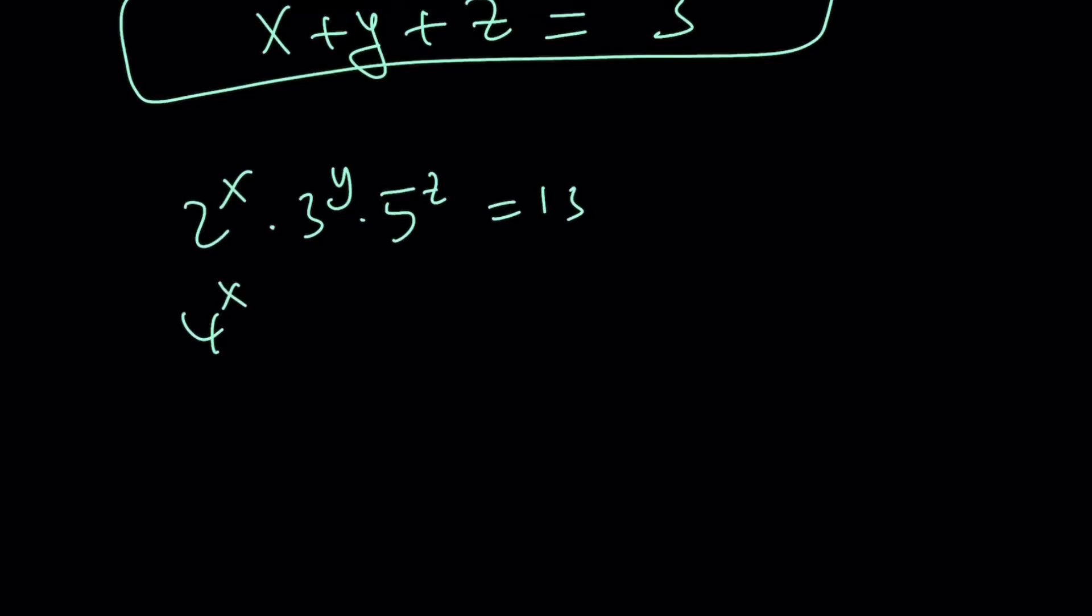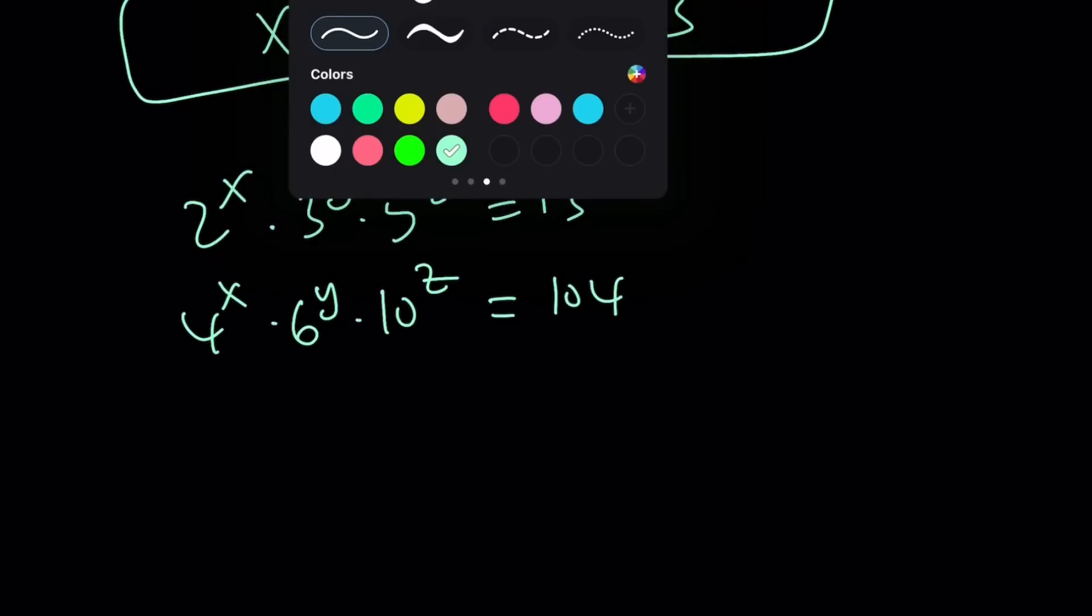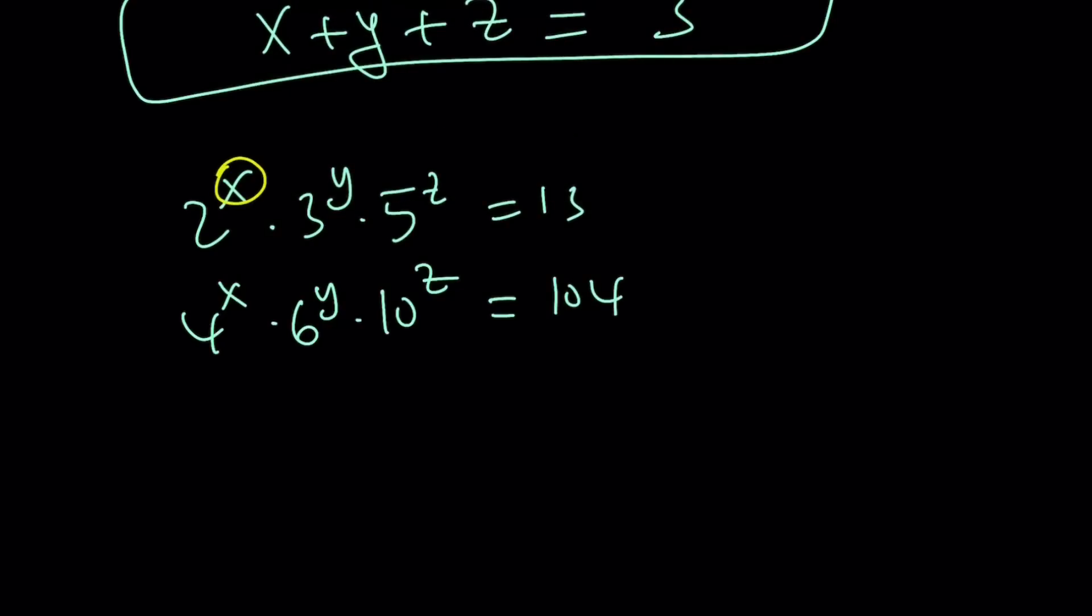And now, I want to replace x with 0 because that'll simplify the process. And 2 to the power of 0 is 1, and 4 to the power of 0 is 1, and I'm replacing x with 0. That's cool.